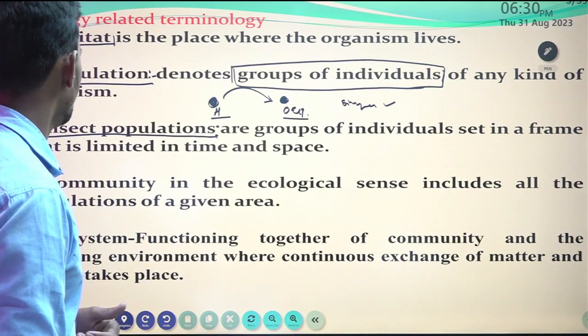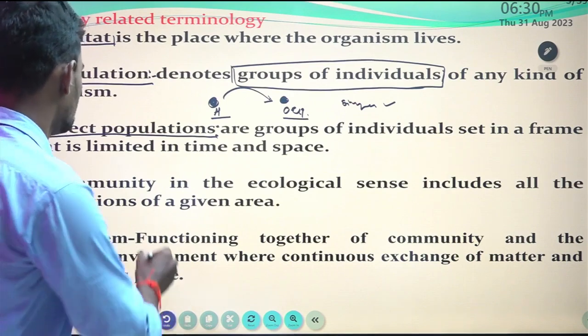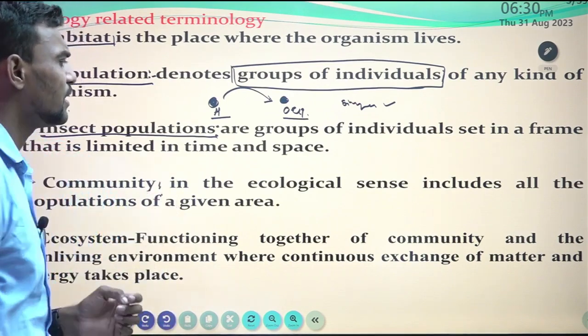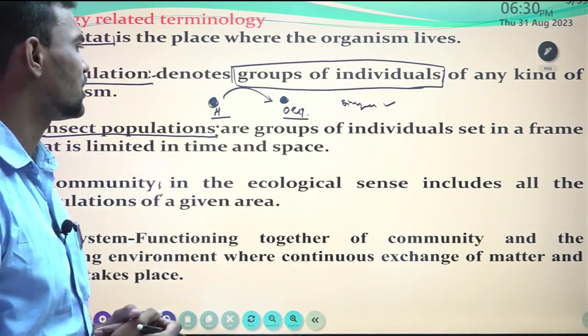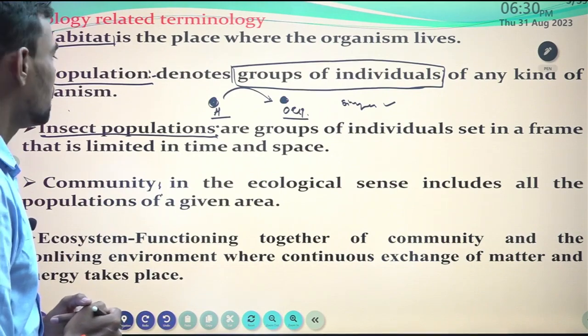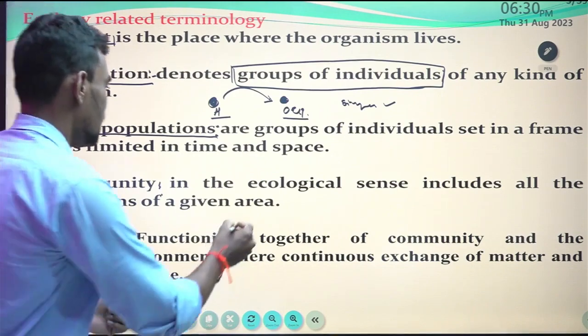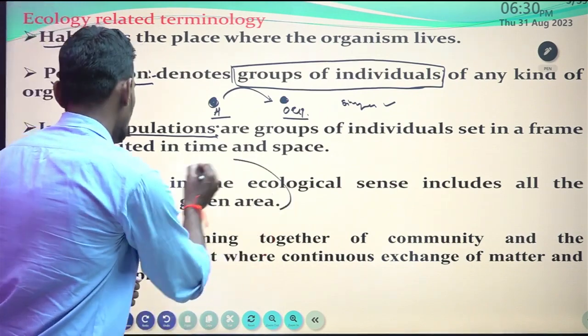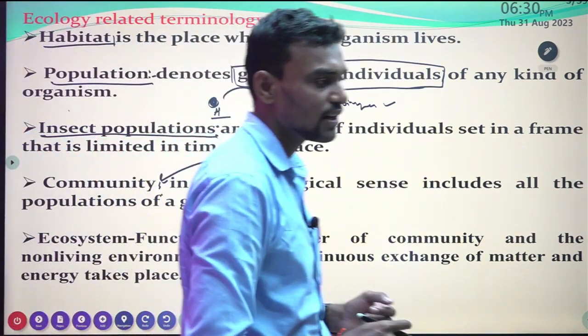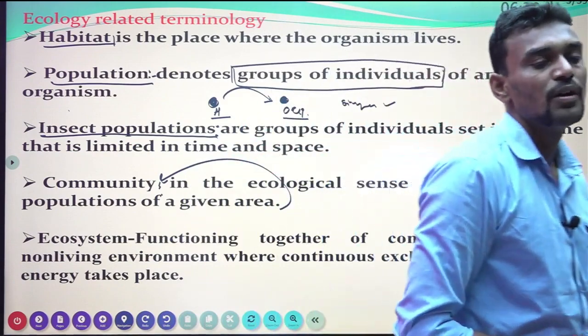The next term is community. In the ecological sense, community includes all the populations of a given area — all populations of the given area, just like a community of people.